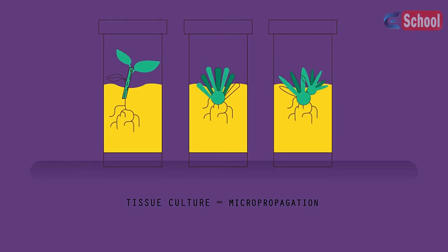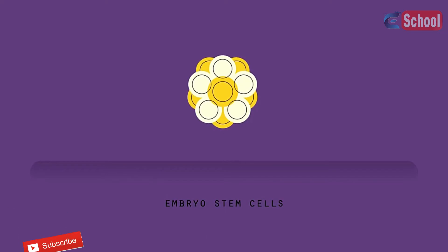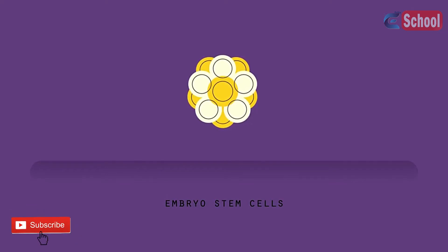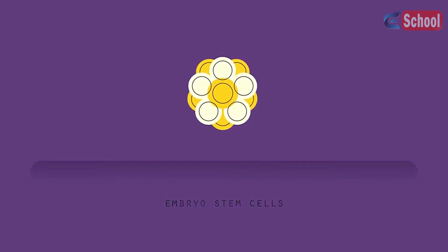Animals can also be cloned, but different techniques need to be used. In animals, only embryo stem cells have the capability to differentiate into all the different types of cells found in an adult. There are two methods you can use.